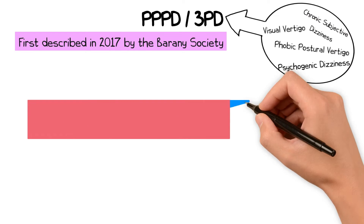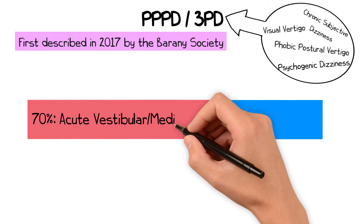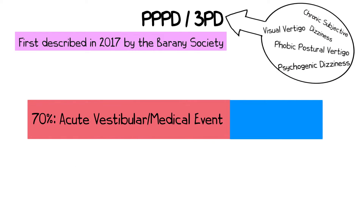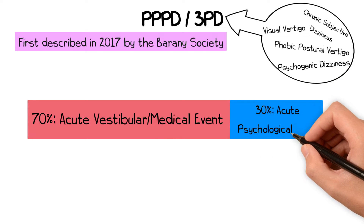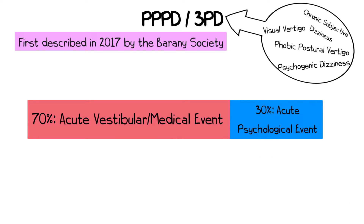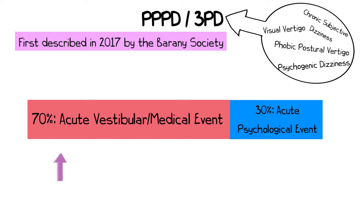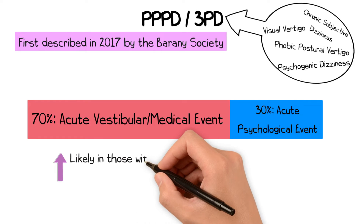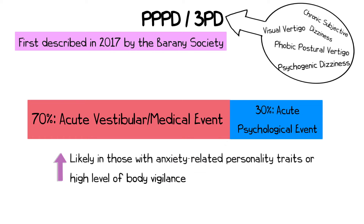In 70% of cases the symptoms begin with an acute vestibular or medical event, while in 30% it may begin with an acute psychological event, such as a stressful life event. Anxiety-related personality traits, or those with a high level of body vigilance, are more likely to develop 3PD.